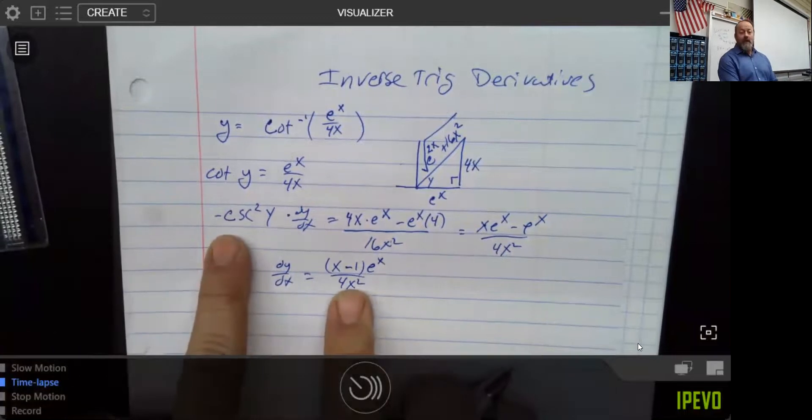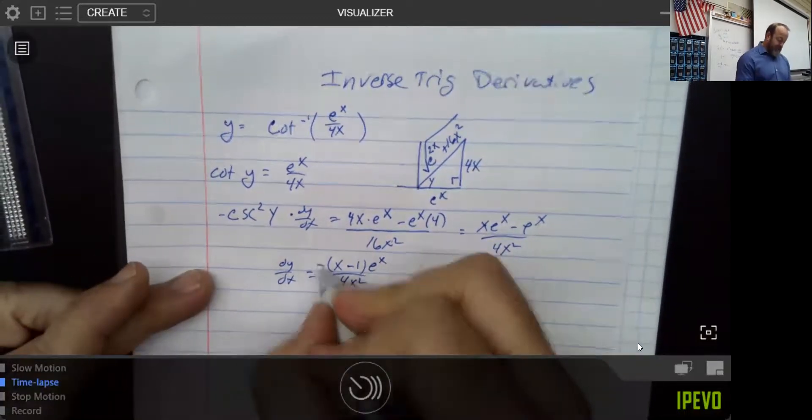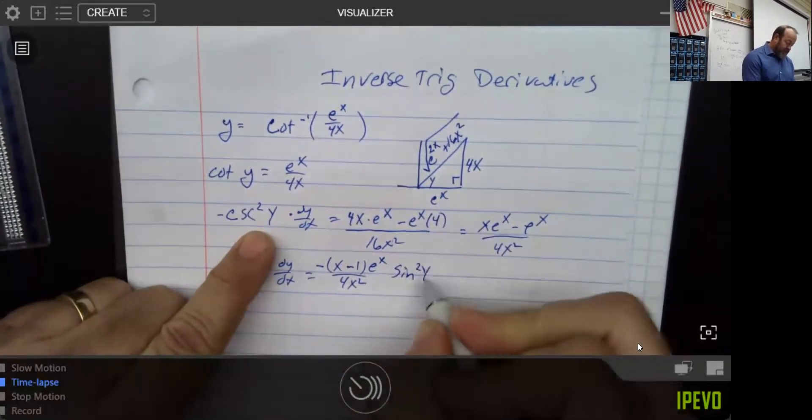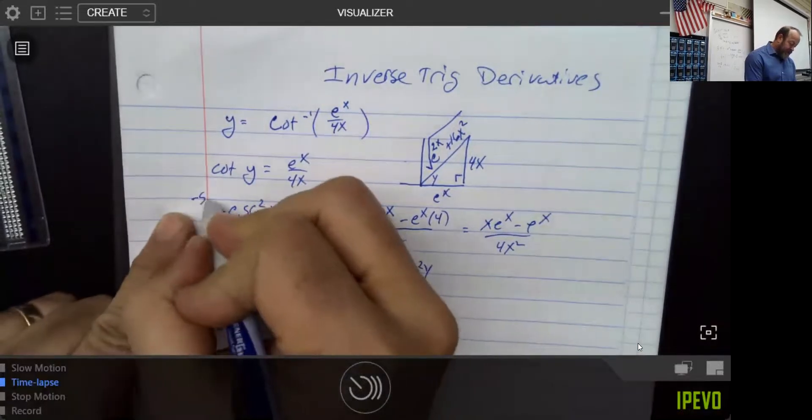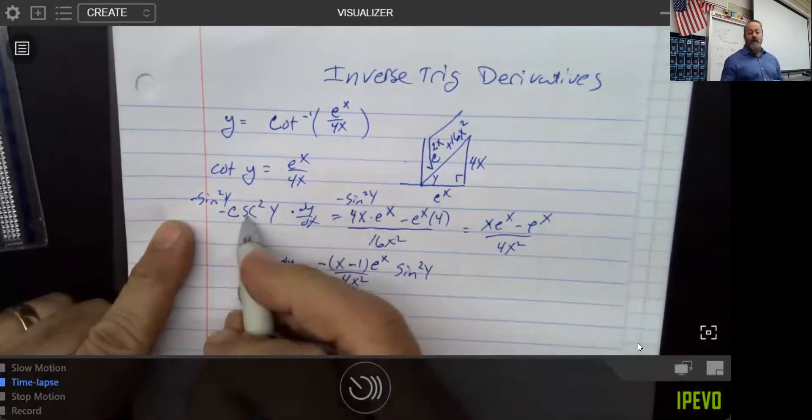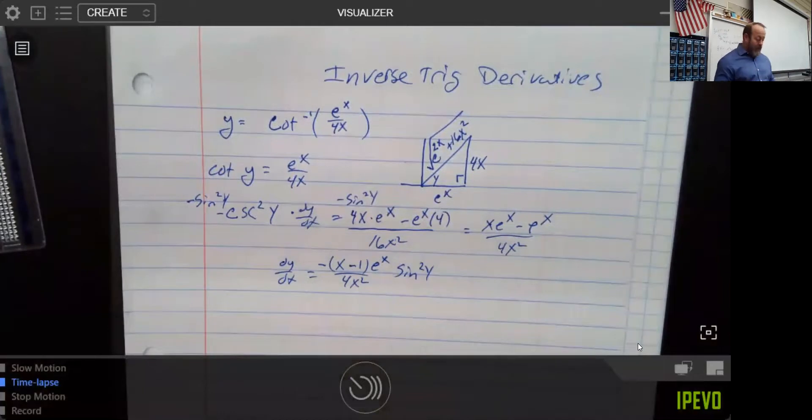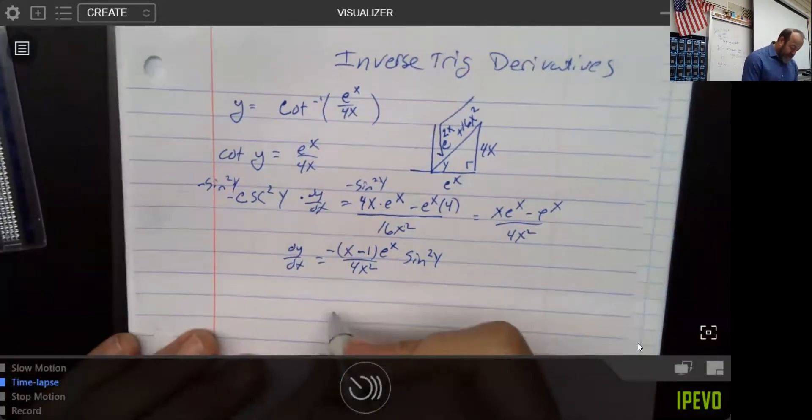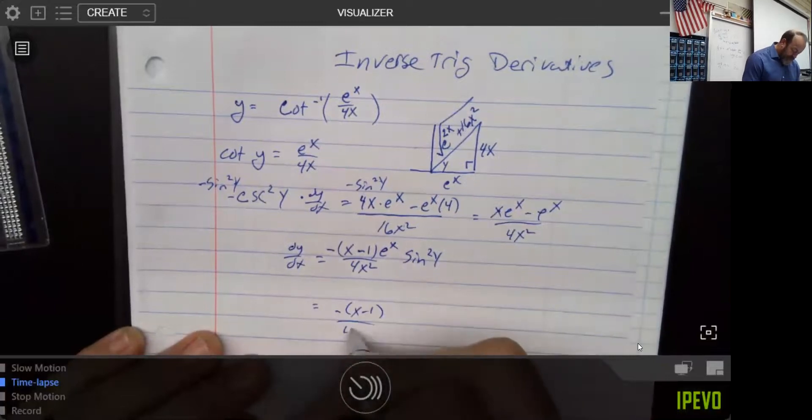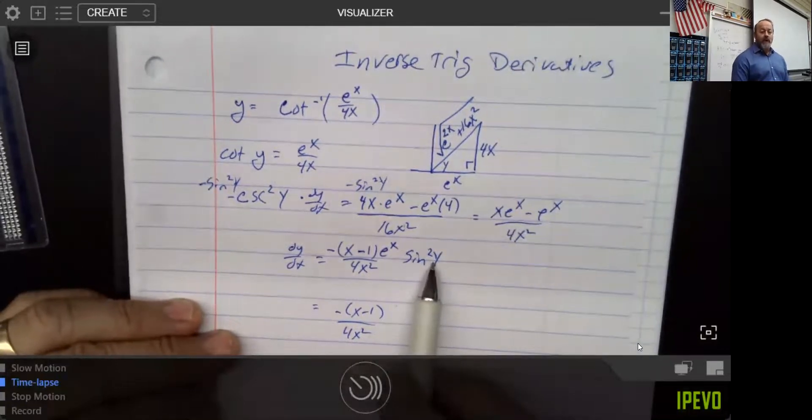I need this negative cosecant squared to come to the other side, so I'm going to multiply both sides by a sine squared of y. Keep in mind, if you multiply by a negative sine squared on both sides, a sine squared and a cosecant squared are inverses of each other, so they would cancel out, and then all I have left to do to complete and finish my story is look above at the question phrase and decide what is the sine squared.